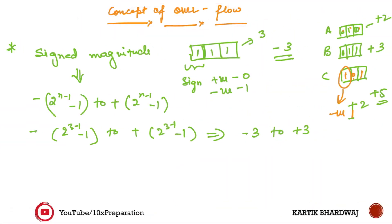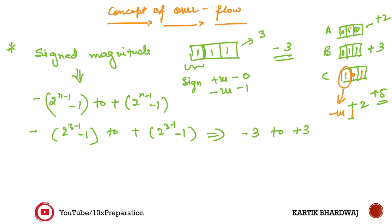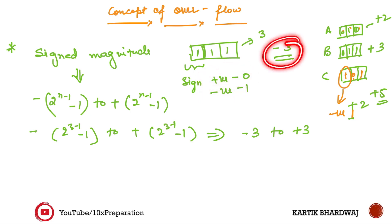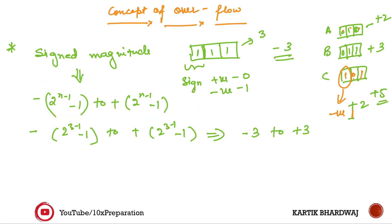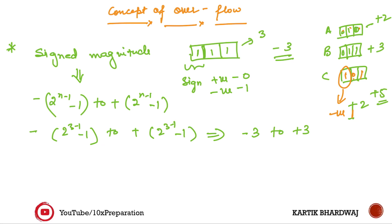Coming back to the concept of overflow, in sign magnitude representation the first bit represents the sign and the remaining bits represent the magnitude. For example, if we have 1 1 in sign magnitude, the first bit 1 indicates a negative number and the rest gives magnitude 1, so it represents minus 1. The range of sign magnitude is from minus (2 raised to the power n minus 1 minus 1) to plus (2 raised to the power n minus 1 minus 1).